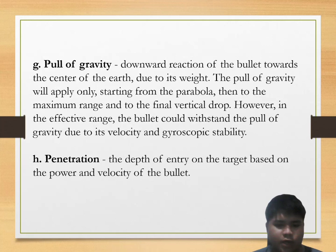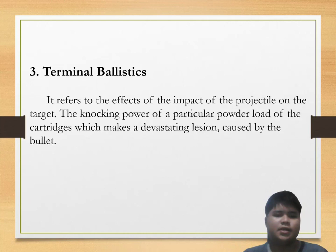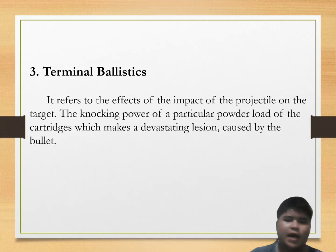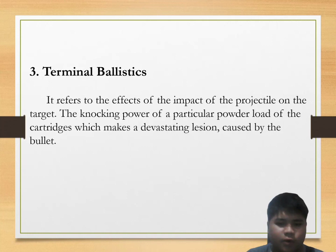The third branch of ballistics is terminal ballistics. It refers to the effects of the impact of the projectile on the target — the necking power of a particular powder load of the cartridge — which makes a devastating lesion caused by the bullet.